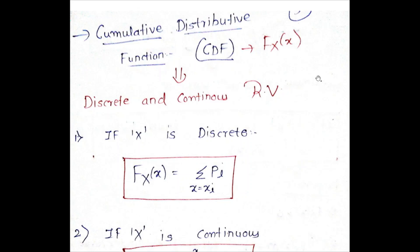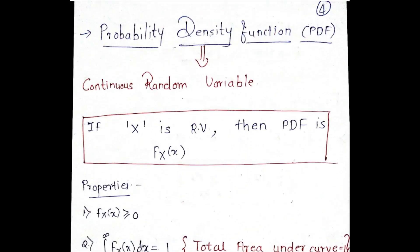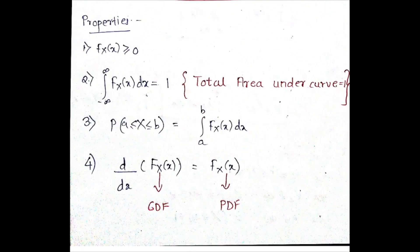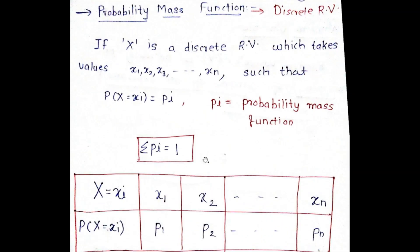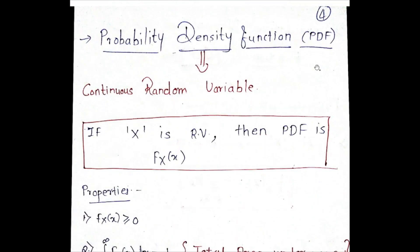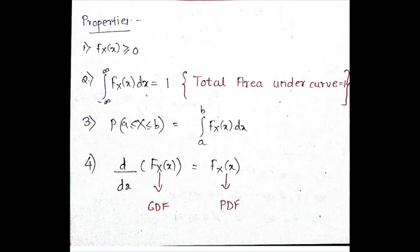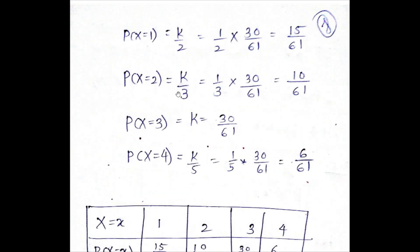There is a property again for probability density function. As in case of PMF, all the summation value was equal to 1. The probability density function is a continuous random variable. And hence, the integration value from minus infinity to infinity is going to be equal to 1.